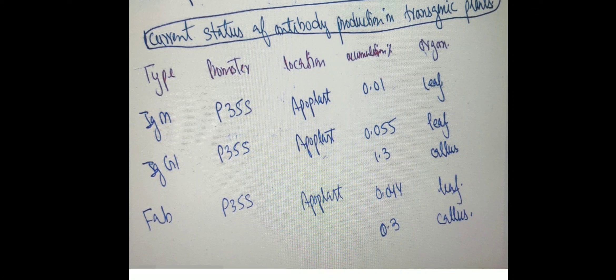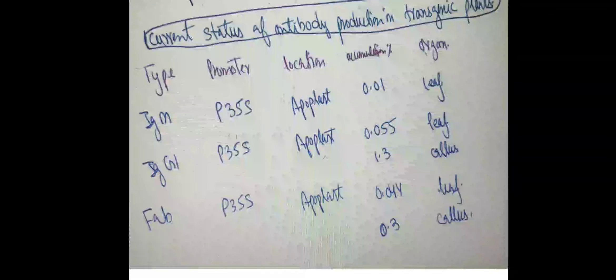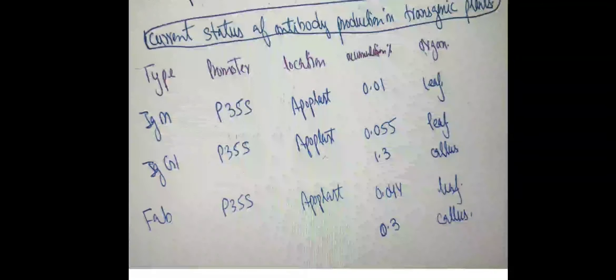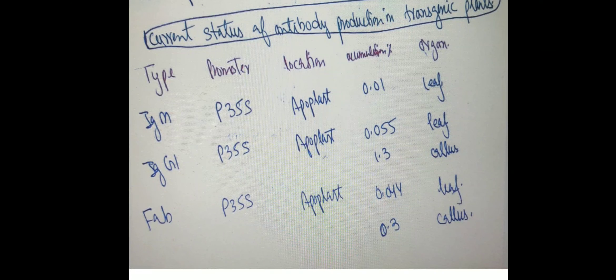We can also produce antibody fragments like Fab. Using P35S promoter with apoplast as location, producing Fab in leaves gave 0.044 percent accumulation. In callus, the accumulation rate was higher at 0.3 percent. This shows that in vitro culturing for antibody production gives higher accumulation than under natural conditions.